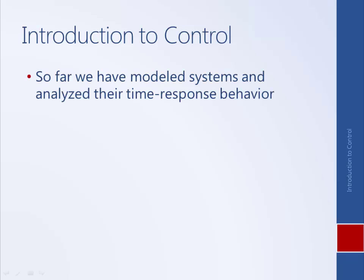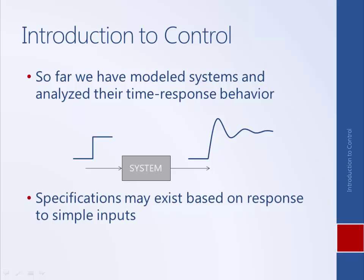So far, we've modeled dynamic systems and analyzed their time response behavior. We've derived models for mechanical systems, electromechanical systems, and electrical systems. And we've learned how to predict the time response or the output of a system for a given set of initial conditions and a given input. We've also learned about certain canonical systems, first-order systems and second-order systems, and have created specifications based on the response of these canonical systems to simple inputs, for example, a step input.